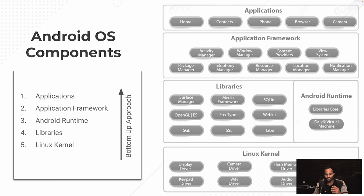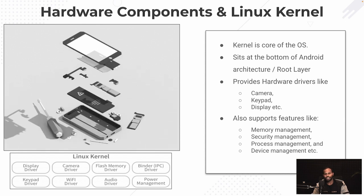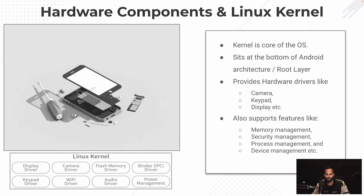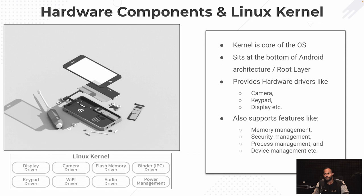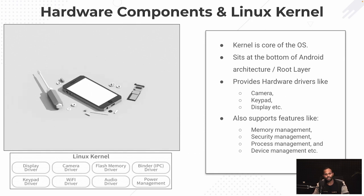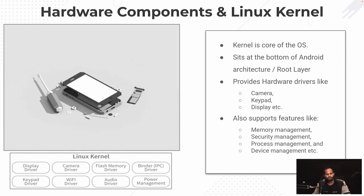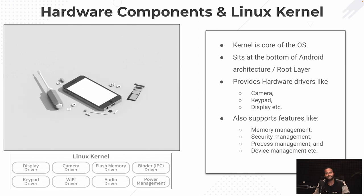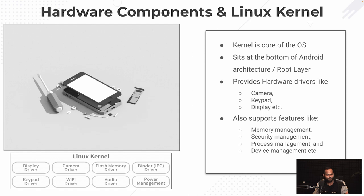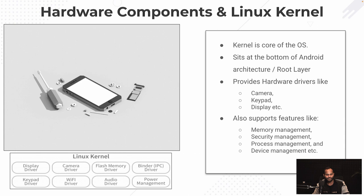You can consider below the Linux kernel is your hardware, and above the application layer is the user. Moving on, we'll first cover the core layer, which is the Linux kernel. As we all know, the Linux kernel is like an interface between the hardware components your mobile has - as you can see in the animation - like the screen, keypad, speakers, cameras, and so many other things.